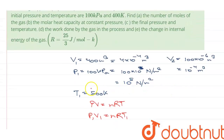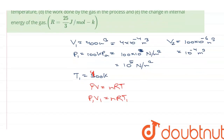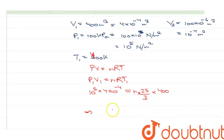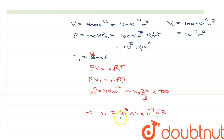So P1 is 10⁵ N/m², V1 is 4 × 10⁻⁴ m³, and this is equal to nRT1. With T1 equal to 400 K and R given as 25/3, we bring everything to one side: n = P1V1 divided by RT1, which is 10⁵ × 4 × 10⁻⁴ × 3 divided by 25 × 400.